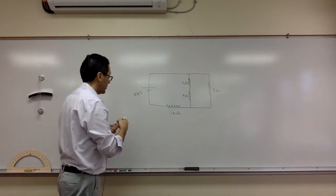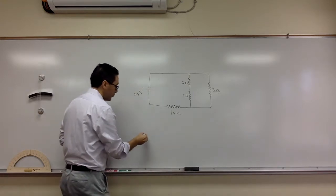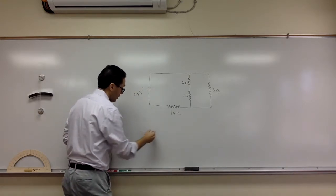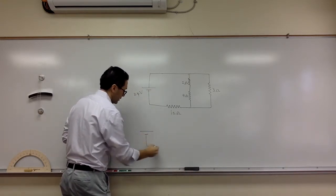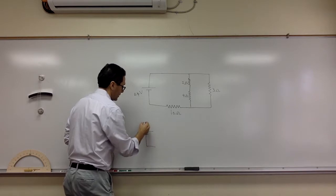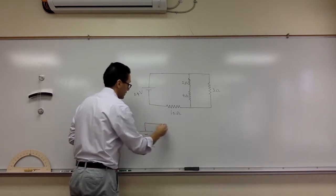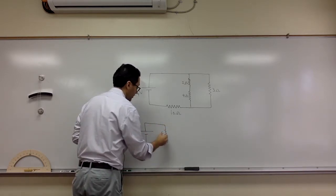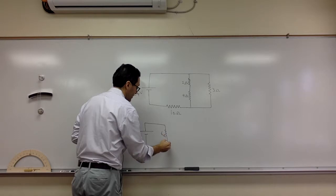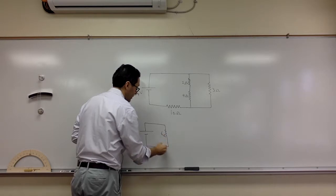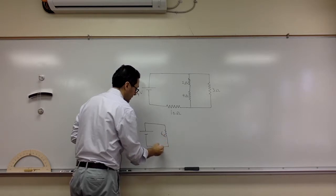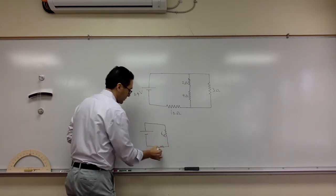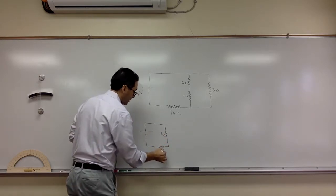The way I treat this is I draw another circuit. I'll put my six ohm here because these are in series — and in series they should have the same current going through them. I put the ten ohm here.